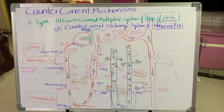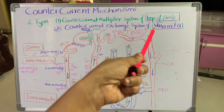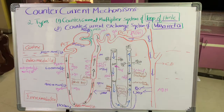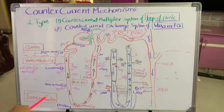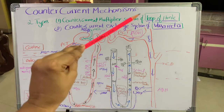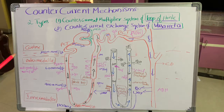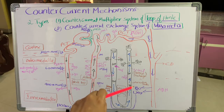Once the osmolarity of 1200 milliosmoles per liter is created in the inner medullary region, we have to maintain it. To maintain that higher osmolarity, another counter current exchange mechanism is involved — the counter current exchange system of vasorecta. Vasorecta is the peritubular network around the loop of Henle. It arises from the efferent renal arteriole, surrounds the loop of Henle to provide oxygen and nutrients, and also follows the hairpin-like path of the Henle's loop.